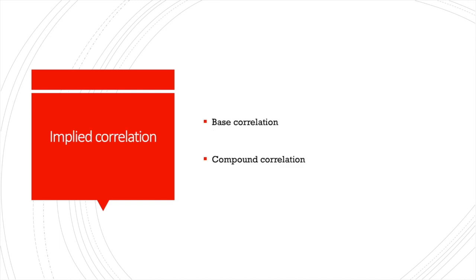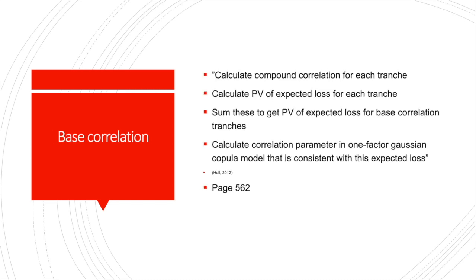We can calculate the implied copula correlation. There are two types: compound correlation and base correlation. Compound correlation adjusts the model correlation to fit market correlation. For base correlation, the steps are: first, calculate the compound correlation for each tranche; then calculate the present value of expected loss for each tranche; sum these to get the present value of expected loss for base correlation tranches; and finally, calculate the correlation parameter in the one-factor Gaussian copula model consistent with that expected loss.